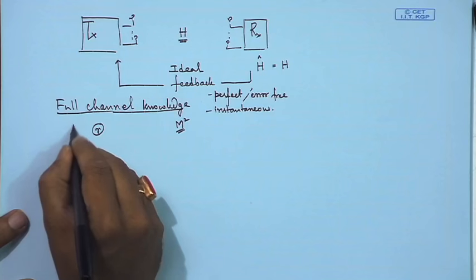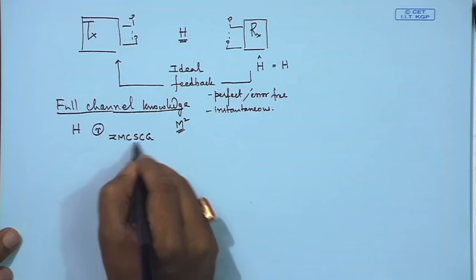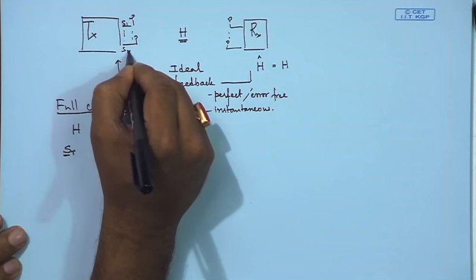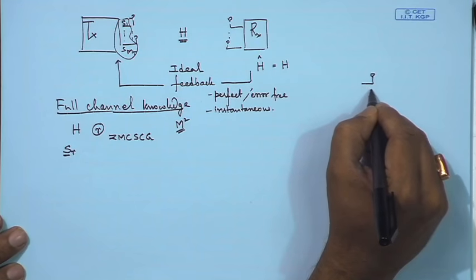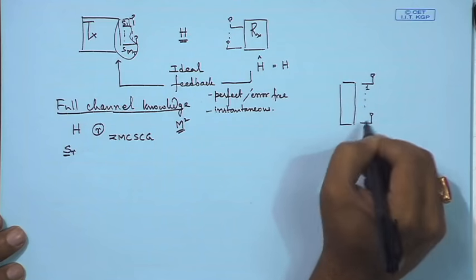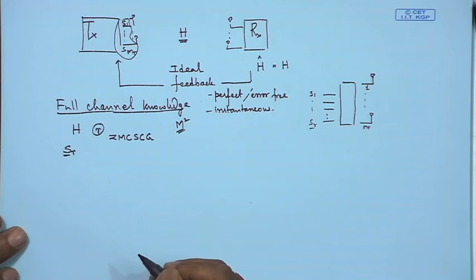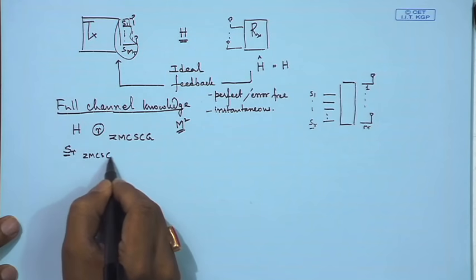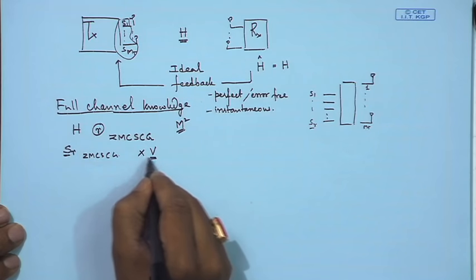We consider H to be of rank r, meaning it is not a full-rank matrix. H is zero-mean circular symmetric complex Gaussian. The transmitted vector s_r contains symbols s_1 up to s_r — not s_{m_t} — indicating that there is some processing unit before transmission, and s_r symbols are being sent from the transmitter. This s vector is zero-mean circular symmetric complex Gaussian.